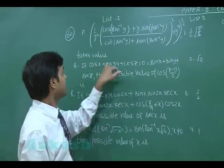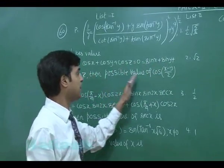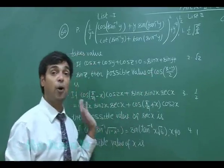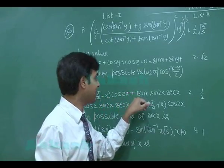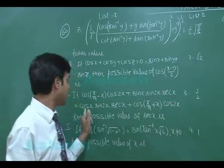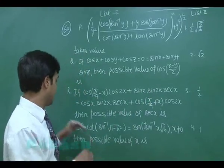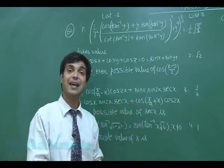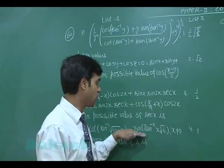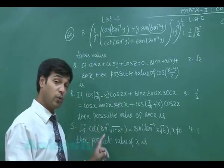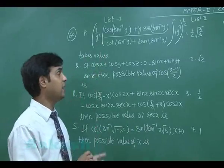Part Q: if cos x + cos y + cos z = 0 = sin x + sin y + sin z, find the possible value of cos((x−y)/2). Part R: if cos(π/4 − x)·cos2x + sin x·sin2x·sec x = cos x·sin2x·sec x + cos(π/4 + x)·cos2x, find the possible value of sec x. Part S: if cot(sin⁻¹√(1−x²)) = sin(tan⁻¹(x√6)), x ≠ 0, find the possible value of x.